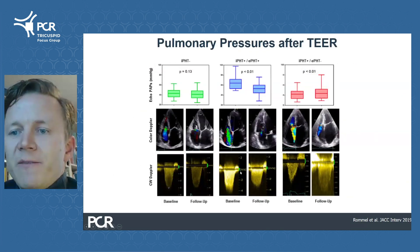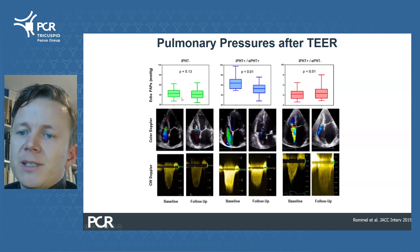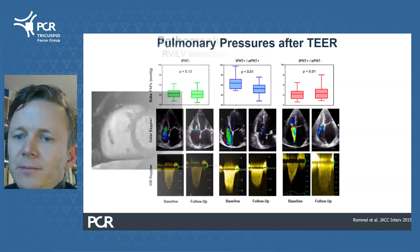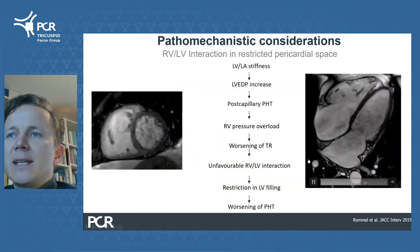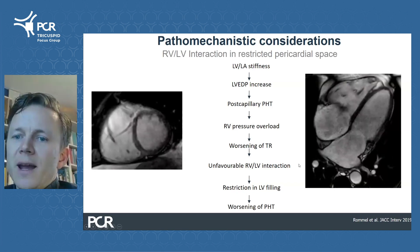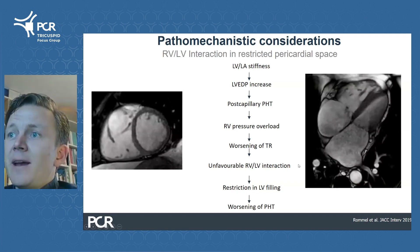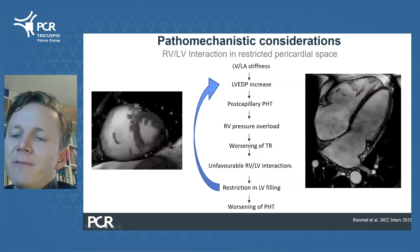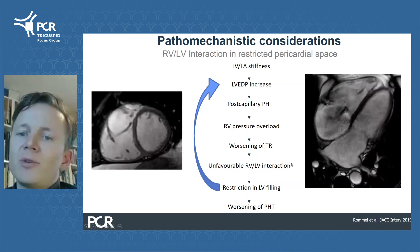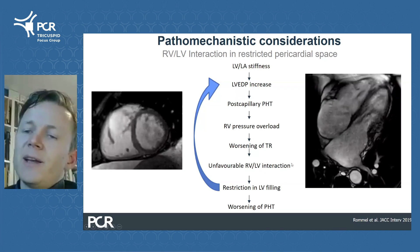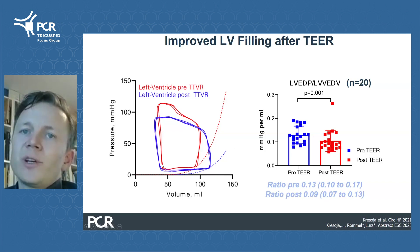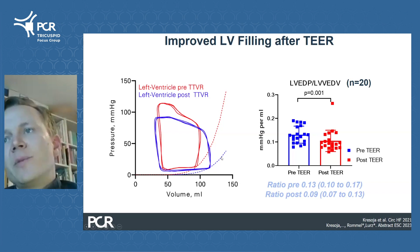Turning to afterload, we see quite a variable response, with no change in pulmonary pressures in some patients, even a reduction in this cohort, and a slight increase in others. This is most likely explained by the complex interplay of the ventricles and the favorable effect of the reduction of RV volume overload on ventricular interdependence, reducing left ventricular filling pressures and therefore the post-capillary component of pulmonary hypertension, improving LV filling. This is corroborated when looking at left ventricular physiology after tricuspid repair, where we observe improved filling and an improvement in diastolic function.